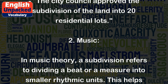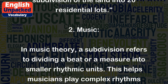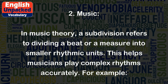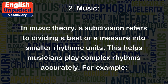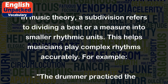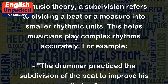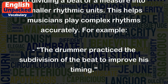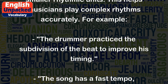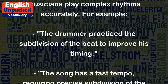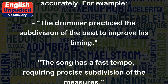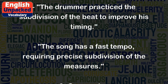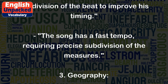Music: In music theory, a subdivision refers to dividing a beat or a measure into smaller rhythmic units. This helps musicians play complex rhythms accurately. For example, the drummer practiced the subdivision of the beat to improve his timing. The song has a fast tempo, requiring precise subdivision of the measures.